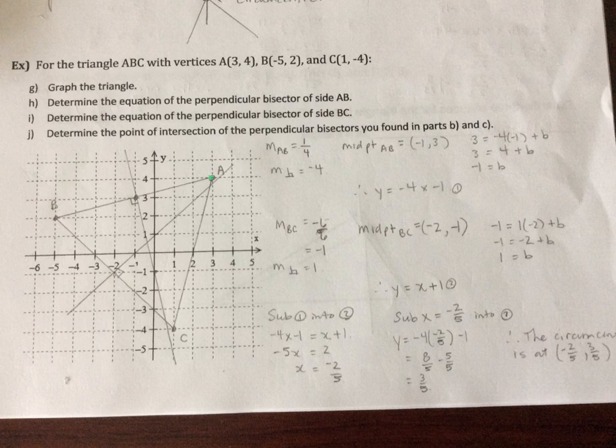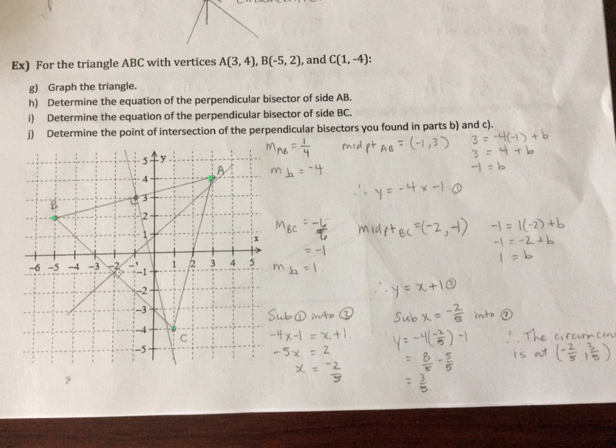I have graphed my three points. They're the same three points that I had on the previous centroid example. The three points are here. But this time I'm not drawing the medians, I'm drawing the perpendicular bisectors.